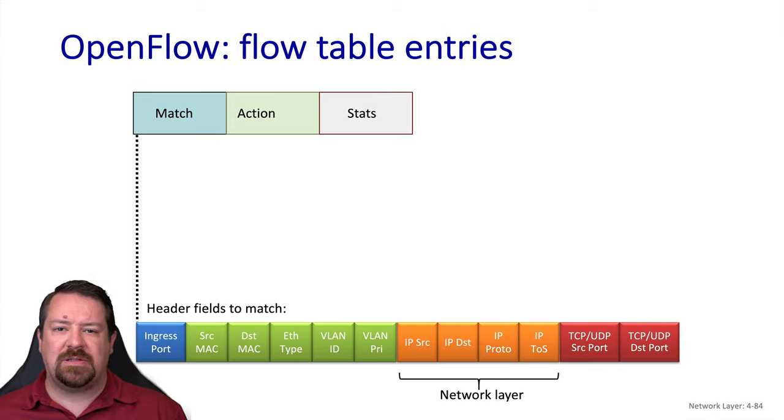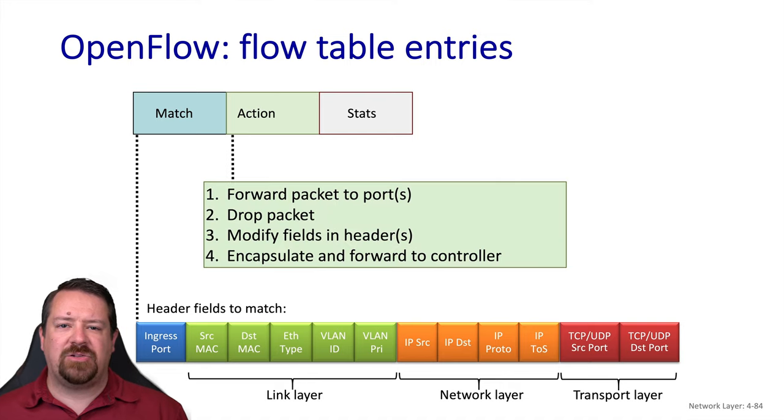So while so far we've just been discussing routers in terms of layer 3 headers, this generalized forwarding applies across multiple layers. The actions available closely match those we've been discussing so far, including forwarding as usual, dropping, modifying particular fields, or sending the packet off to the controller for further action.